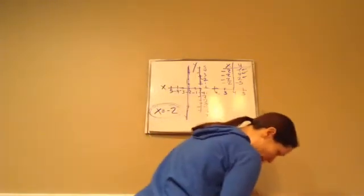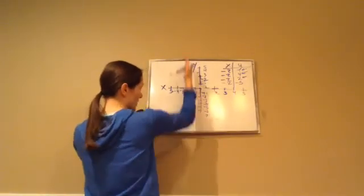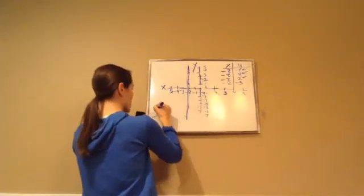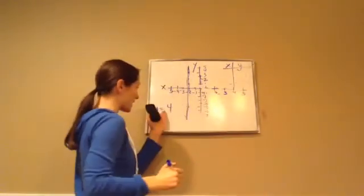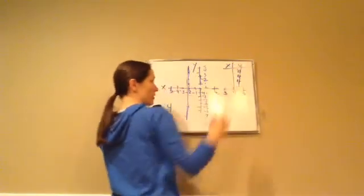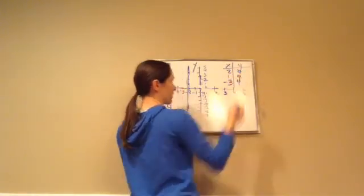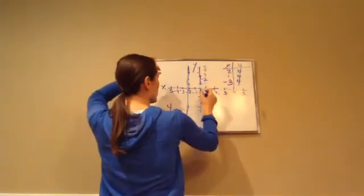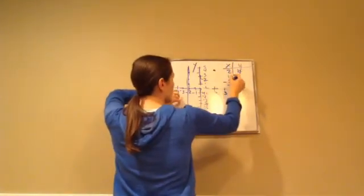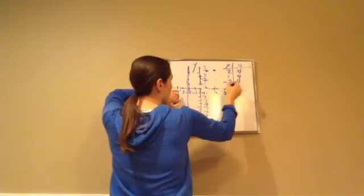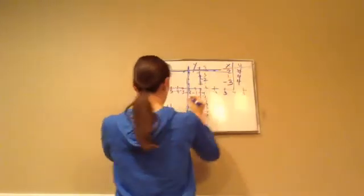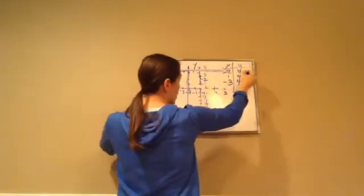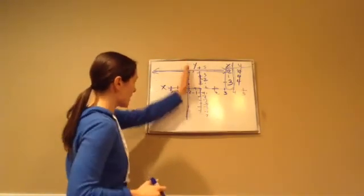Now let's do y equals a constant. If you're already thinking that y equals something will be a horizontal line — you're exactly right. For y equals 4: the y value is always 4, so let me pick x values like 0, 2, and negative 3. Plotting (0, 4), (2, 4), and (-3, 4) all fall on the same horizontal line. So x equals negative 2 is a vertical line, and y equals 4 is a horizontal line.